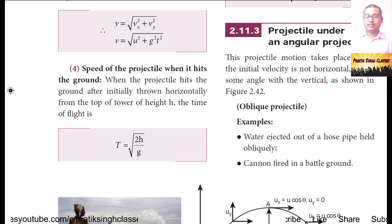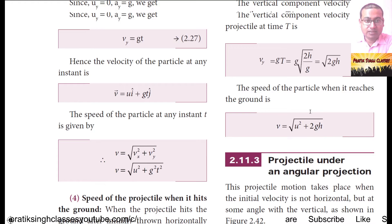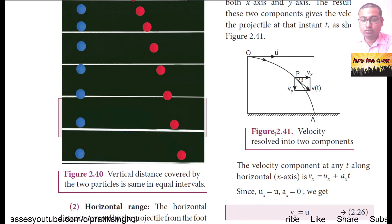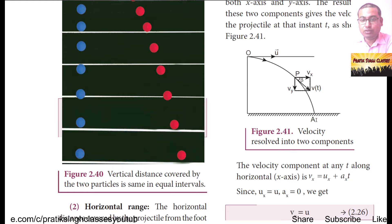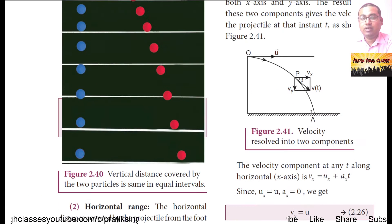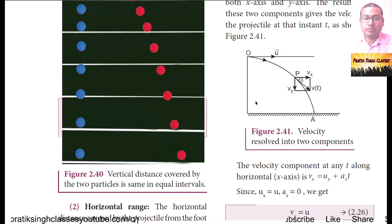Let us start today's class. This is about section 211.3, projectile under an angular projection. In the previous class we studied the meaning of projectile. In figure 2.41 you can see the object moving from O to P to A. This path of the projectile is called the trajectory. The horizontal component of velocity always remains constant, but the vertical component keeps changing with respect to time.